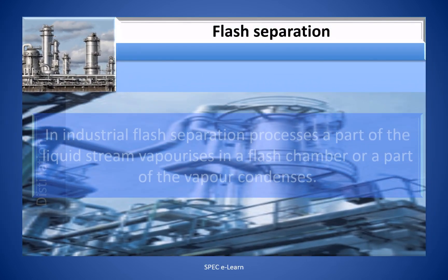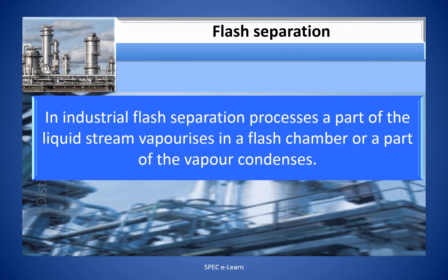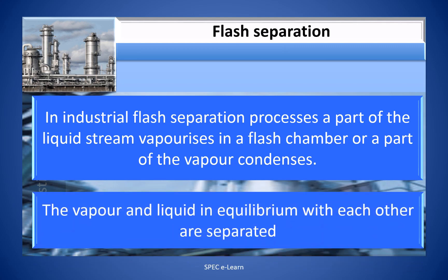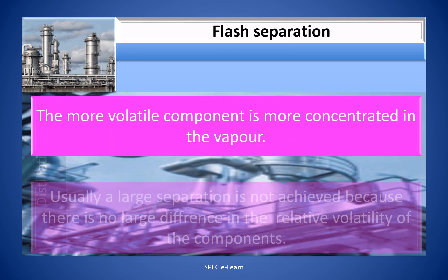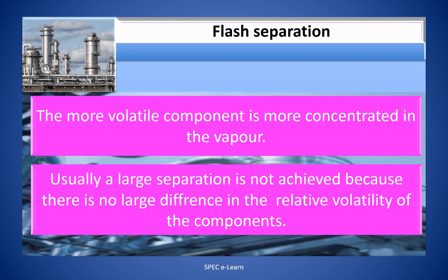In industrial Flash separation processes, a part of the liquid stream vaporizes in a Flash chamber, or a part of the vapor condenses. The vapor and liquid in equilibrium with each other are separated. The more volatile component is more concentrated in the vapor. Usually, a large separation is not achieved because there is no large difference in the relative volatility of the components.